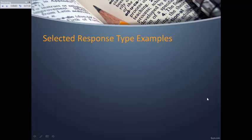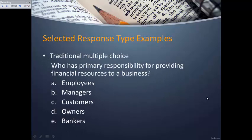The most common selected response type is traditional multiple choice. An example question is: who has primary responsibility for providing financial resources to a business? The choices are employees, managers, customers, owners, or bankers. Assuming one right answer, this item is probably toward the bottom of Bloom's taxonomy—it may not be at the very bottom, but it is not what would be considered higher order thinking.